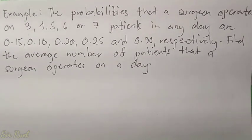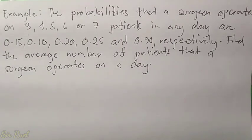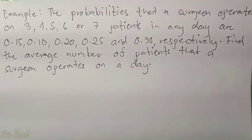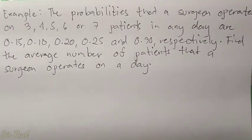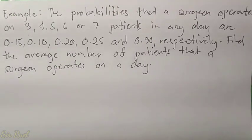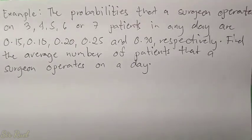Another example: the probabilities that a surgeon operates on 3, 4, 5, 6, or 7 patients in any day are 0.15, 0.10, 0.20, 0.25, and 0.30 respectively. Find the average number of patients that a surgeon operates on a day. Again, the first step in getting the mean of a discrete probability distribution is to construct a probability distribution.